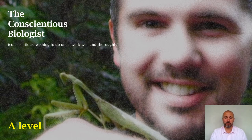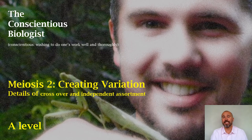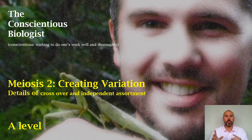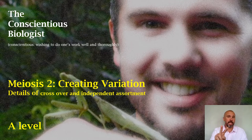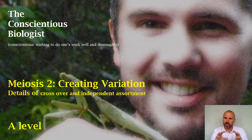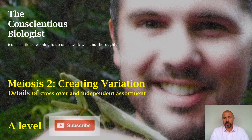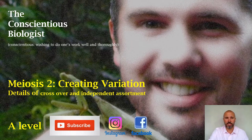Hello, welcome to the next A-level lesson from the Conscientious Biologist, Ben Gallagher. This is the second one in the meiosis playlist, so this is meiosis 2 - creating variation. It isn't the second division of meiosis; we covered all of meiosis, both divisions, in the previous video. This is just the second video about meiosis, and we're specifically looking at the little things that make each gamete very different and can promote huge amounts of variation in the offspring. Please do subscribe to my YouTube channel and have a look on my Facebook and Instagram for loads of additional information.